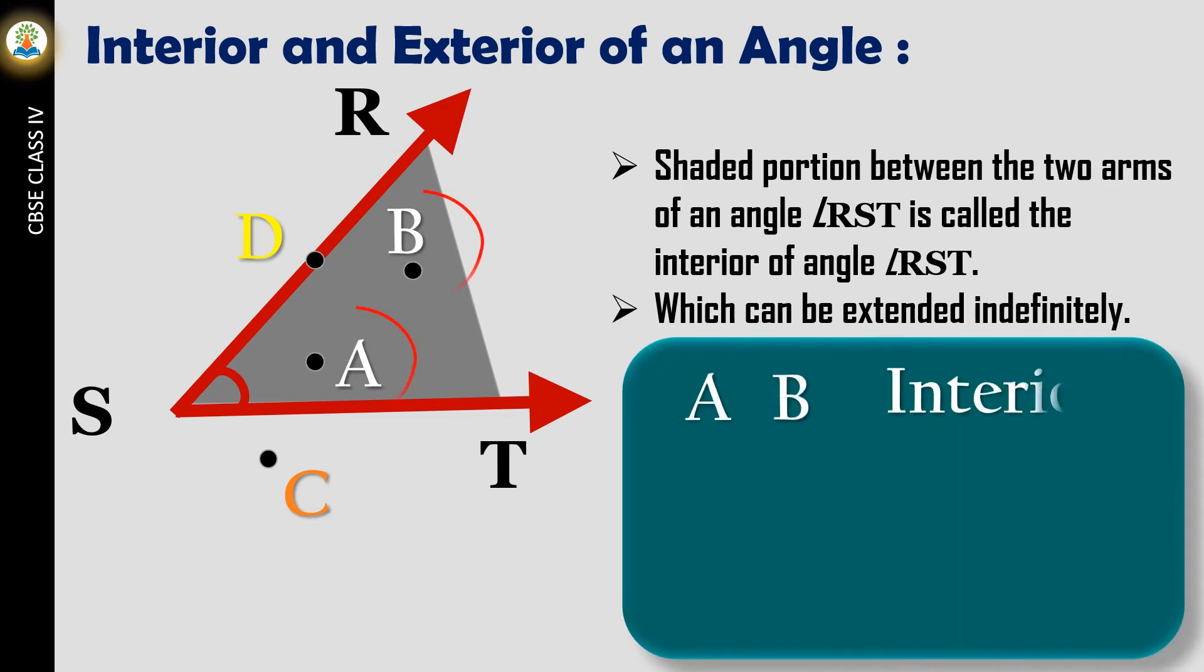Points A and B are in the interior of angle RST. As point C lies outside of angle RST, it lies in the exterior of the angle.